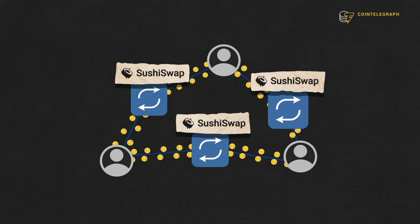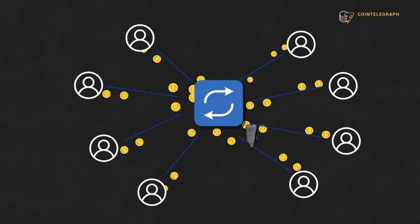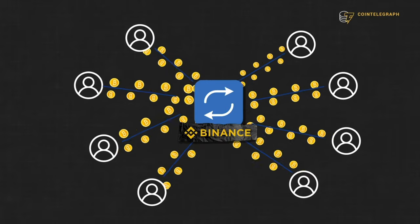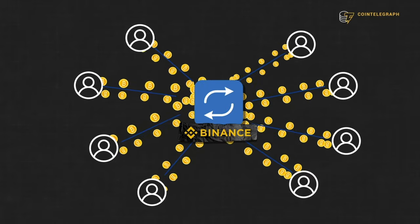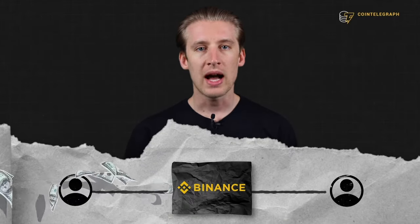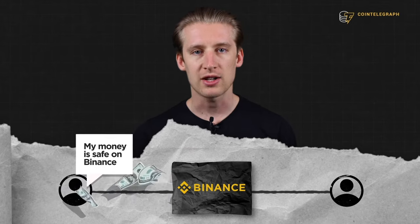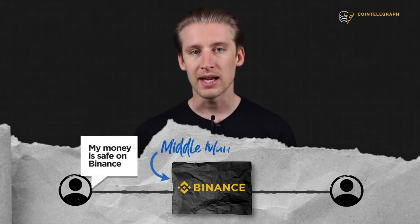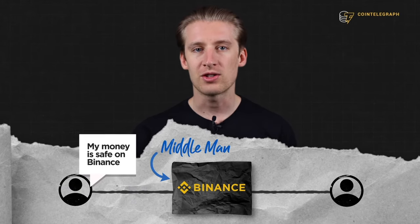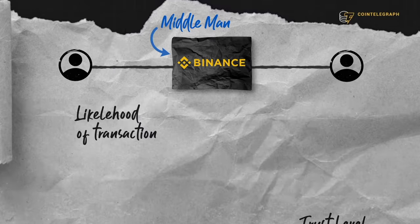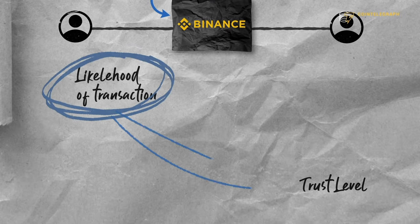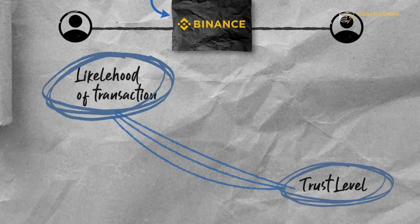But let's say I want to make that transaction on a centralized exchange like Binance instead of a decentralized exchange. What's the difference? When you make that transaction on Binance, you have to trust that Binance will complete the transaction. Binance is the middleman or the third party of that transaction. The likelihood of the transaction executing depends on how much you trust Binance.